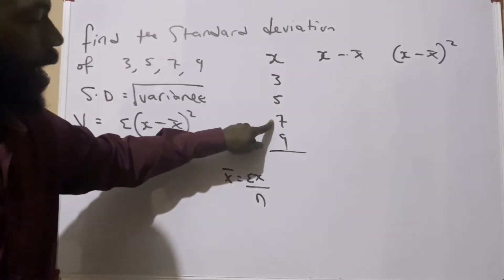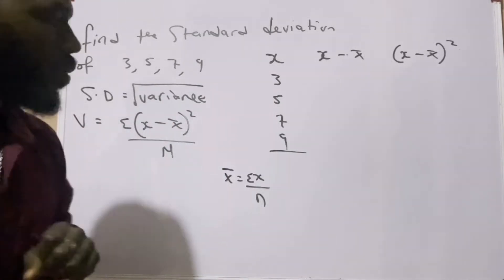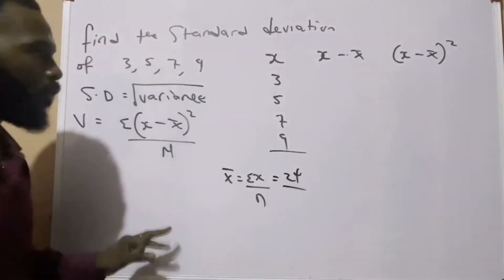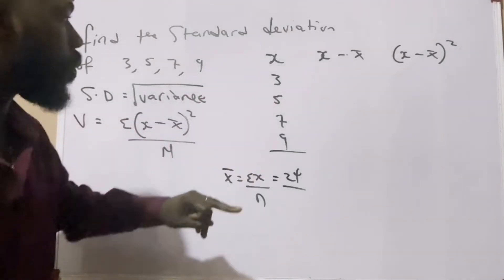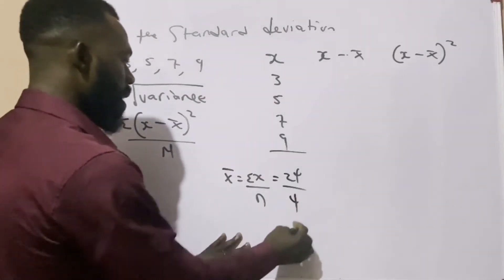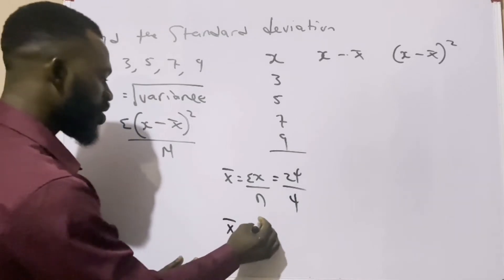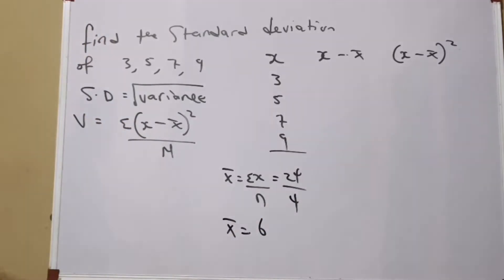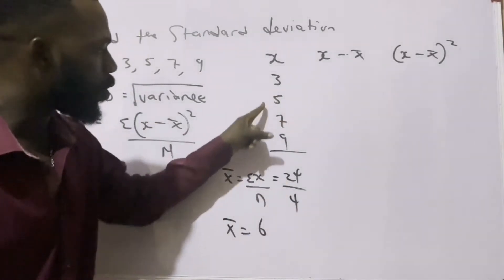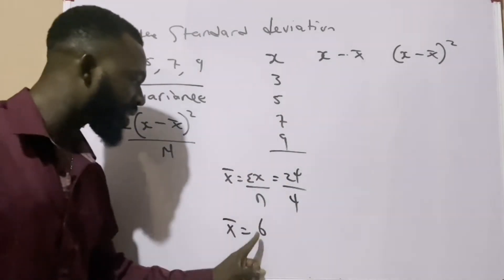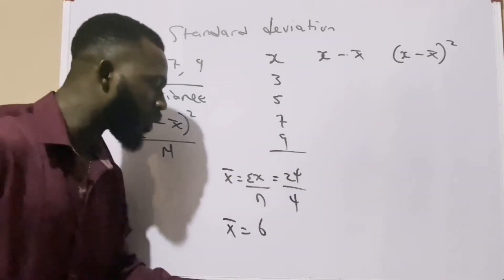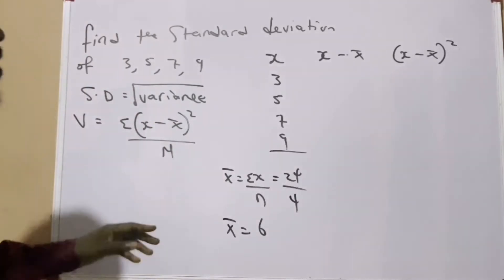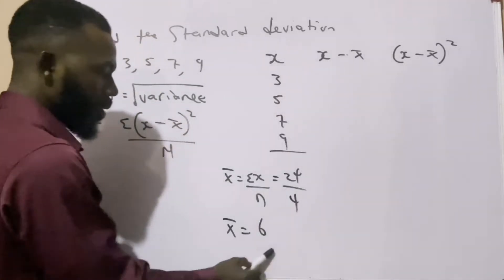If we should add x: 3 plus 5 gives us 8, 8 plus 7 gives us 15, and 15 plus 9 gives us 24. So I have 24 over n. I told you n means how many are they - one, two, three, four - they are four. So it means our mean is equal to 6. So our mean is 6.